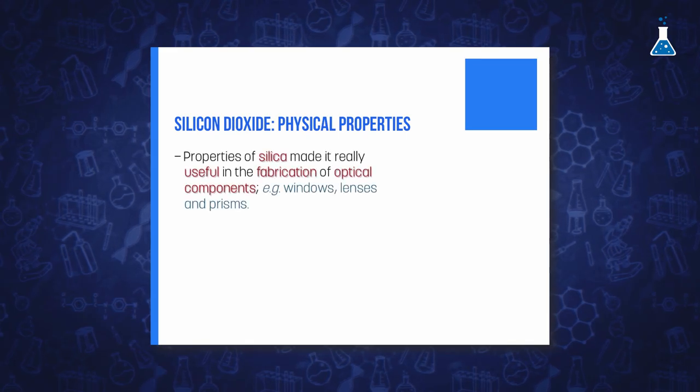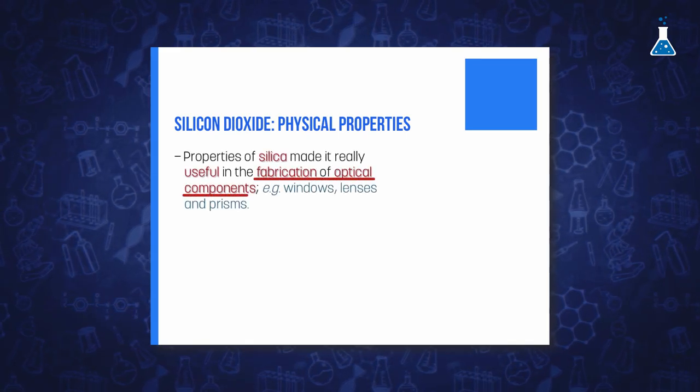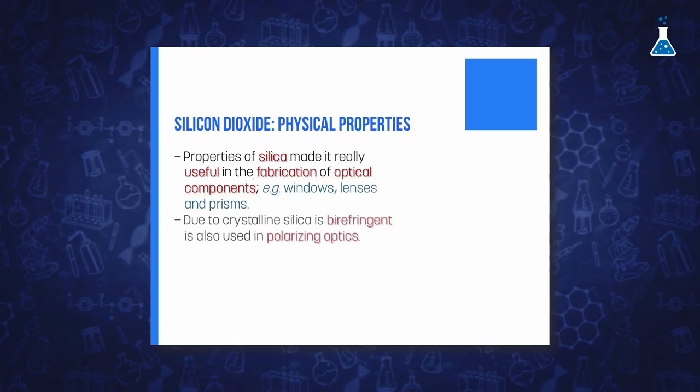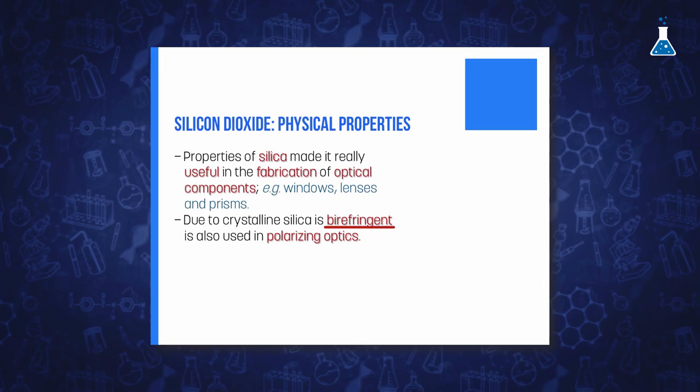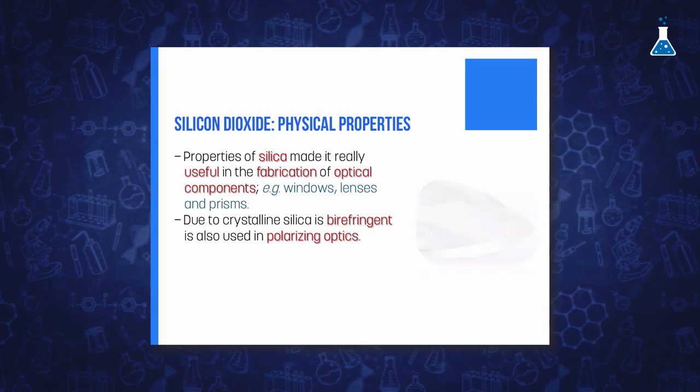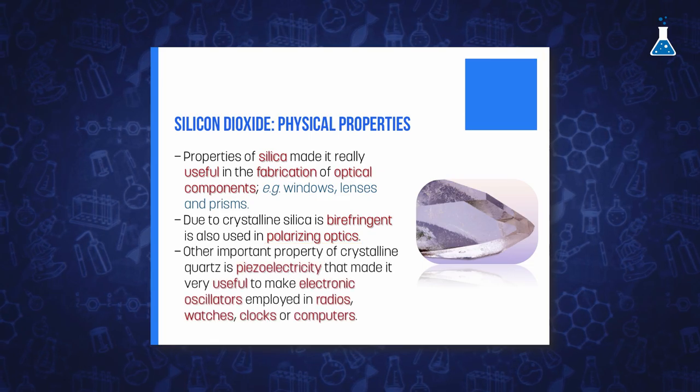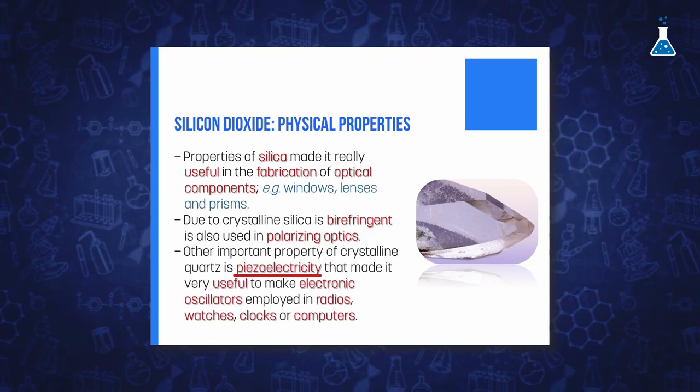For example, fused silica is employed in the fabrication of optical components such as windows, lenses and prisms. Furthermore, due to the birefringence of crystalline quartz, this is widely used in polarizing optics.